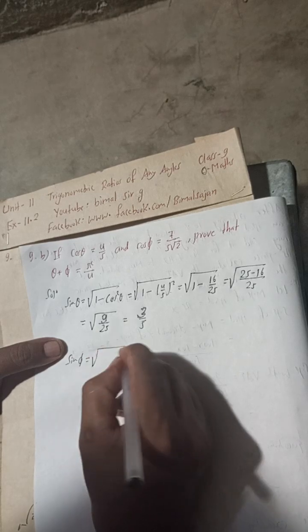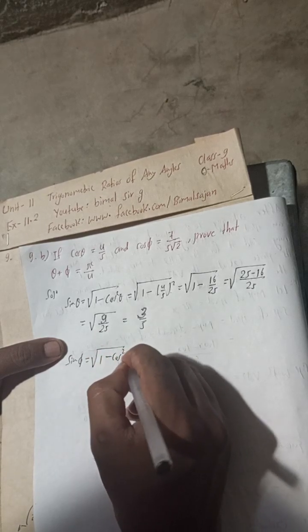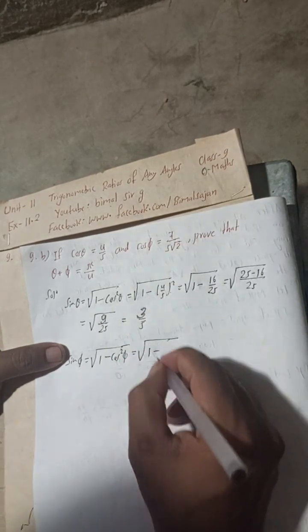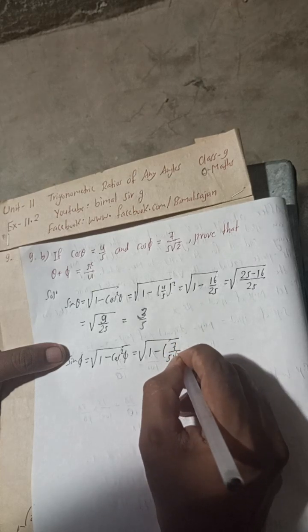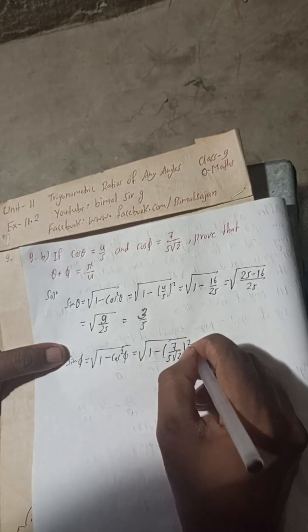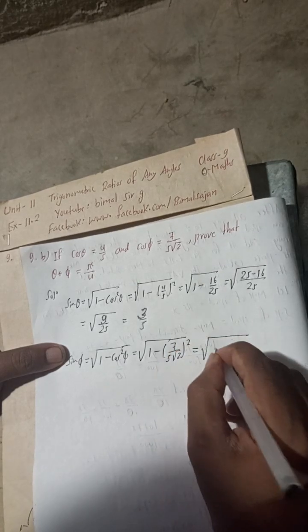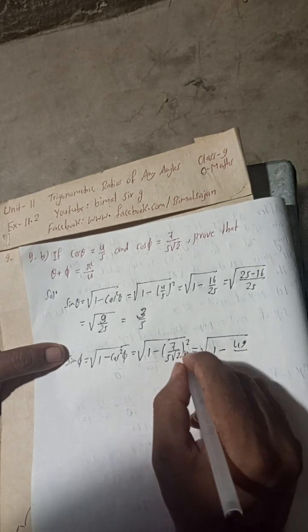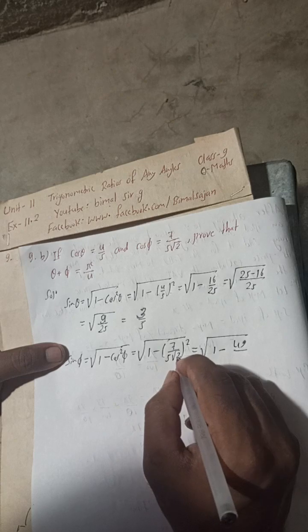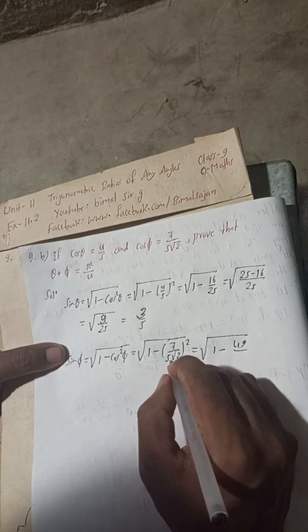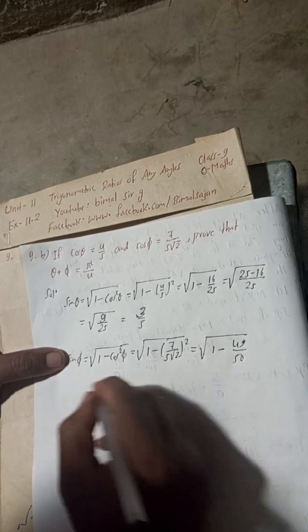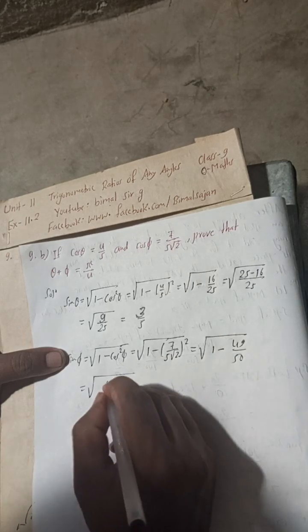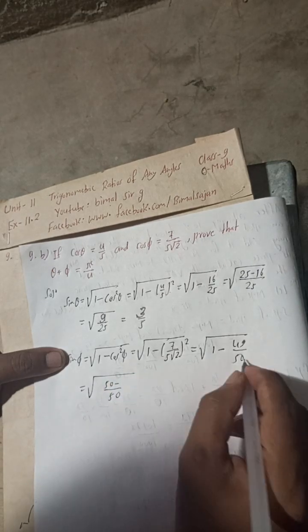Sin φ = √(1 - cos²φ) = √(1 - (7/(5√2))²) = √(1 - 49/(25×2)) = √(1 - 49/50). The LCM is 50, so this equals √((50 - 49)/50) = √(1/50).